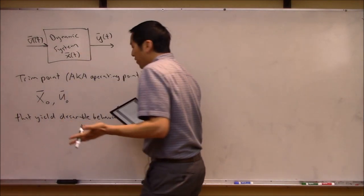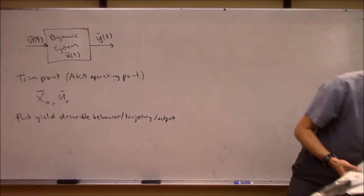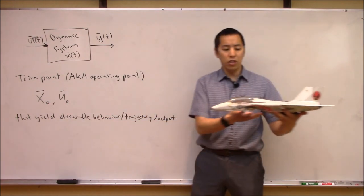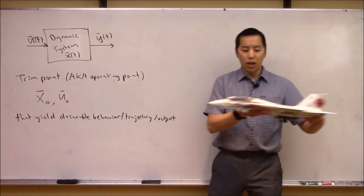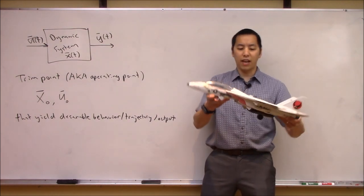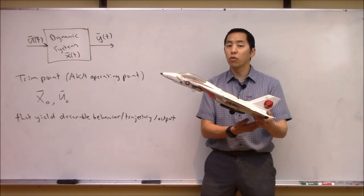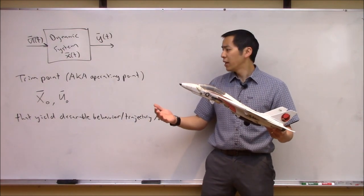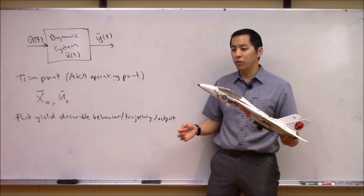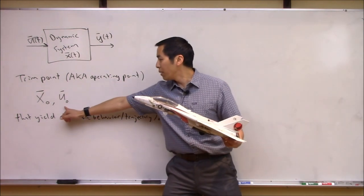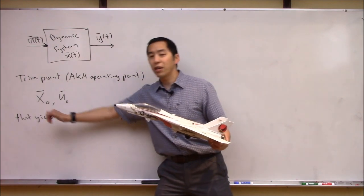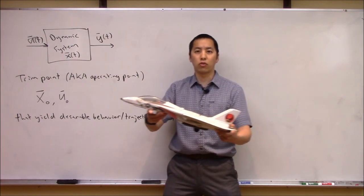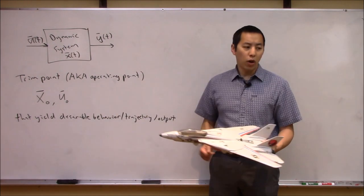For example, if the system is something like an airplane, trimming it with a desired behavior might be finding the control inputs and state vector that would yield straight and level steady-state flight. Obviously for this aircraft to fly straight and level, it has to be at a certain velocity, certain angle of attack, the engines set to a certain propulsive force, and the elevator at a certain deflection angle. This is literally where the term trimming came from — aircraft systems — where a pilot would manually fidget with the control inputs to manipulate the state into the desired configuration.